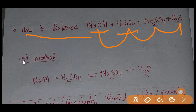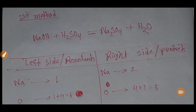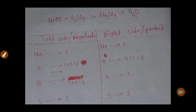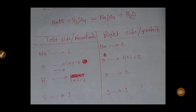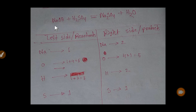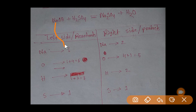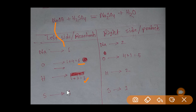In the first method, on the left side (the reactant side), sodium has one atom. Oxygen has one plus four, that is five atoms. Hydrogen has one plus two, equal to three hydrogen atoms, and we have one sulfur on the left side.